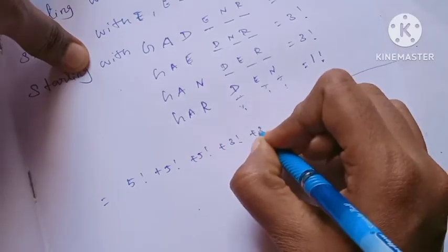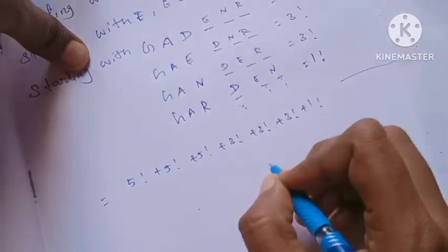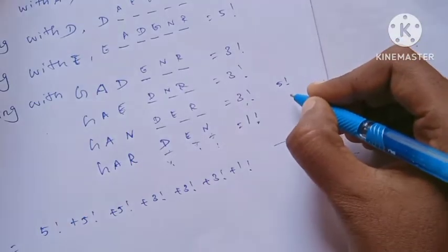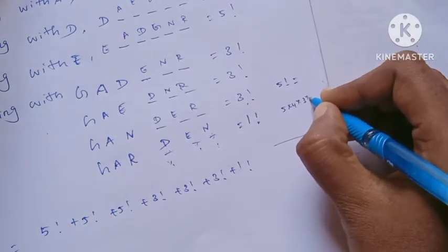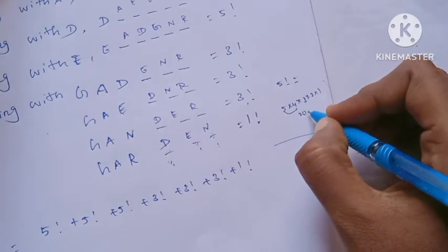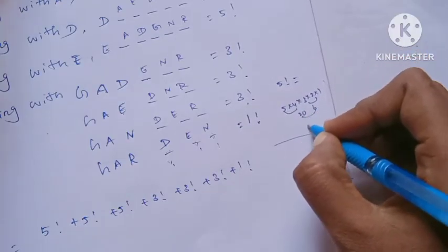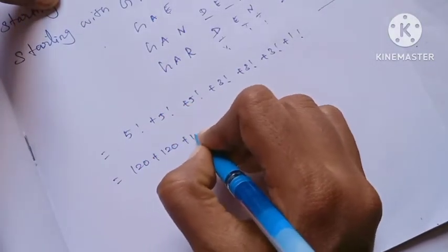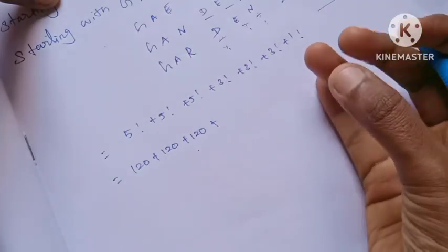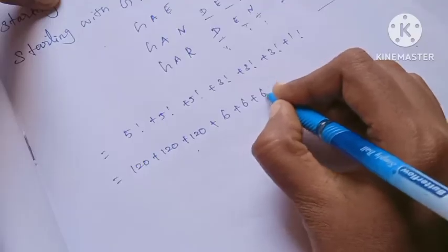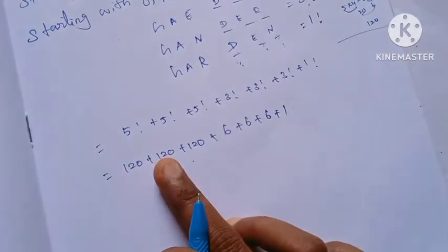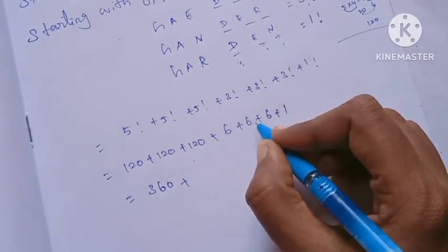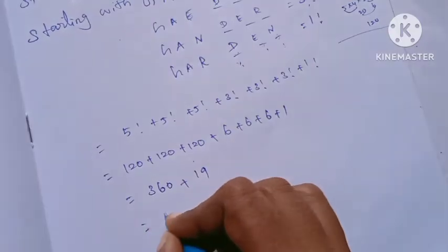So we have: 4 plus 5 factorial, plus 3 factorial, plus 1 factorial. Five factorial is 5 into 4 into 3 into 2 into 1, which equals 120. Three factorial is 6. So 120 plus 6 plus 1 gives us the rank. Adding: 120, then 6, then 1 — the total comes to 79.